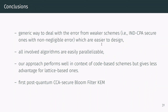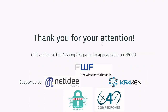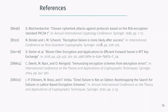To wrap up, we can summarize our findings as follows. We designed a generic compiler to deal with decryption error from weaker schemes, which are easier to design. All involved algorithms are easily parallelizable, which allows improving the runtime. Our approach gives very good results in the context of code-based schemes. Moreover, a similar approach can be used to construct the first post-quantum secure BFKEM. Regarding further research directions, we are thinking about extending our analysis to other constructions to see on which primitives our compiler offers the best performance, and understanding why there is such a strong difference in performance depending on the underlying problem. Thank you for your attention.